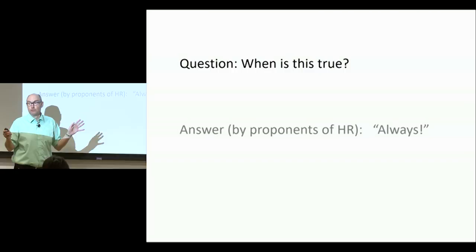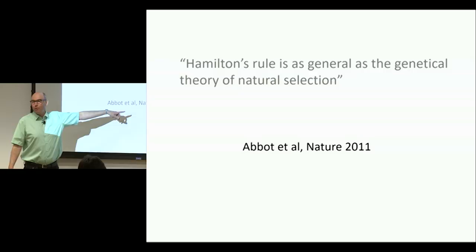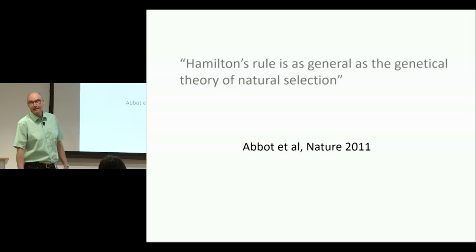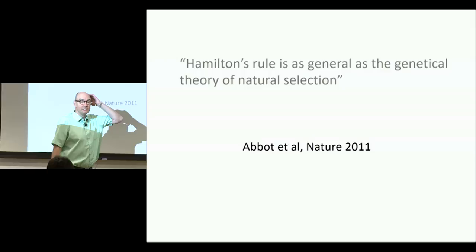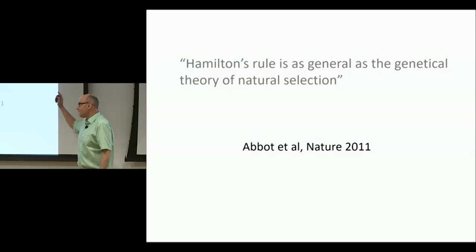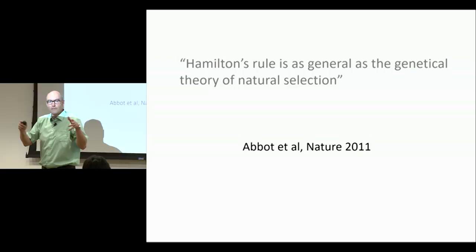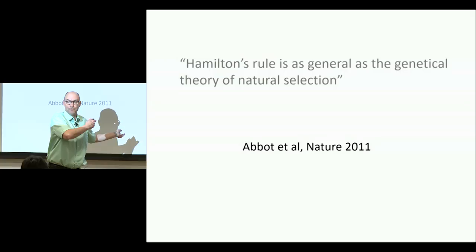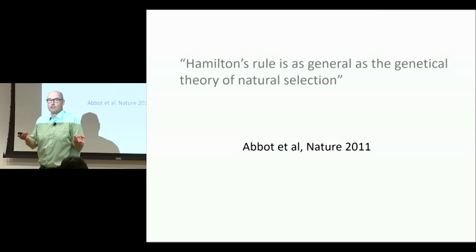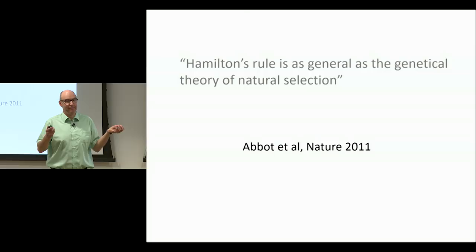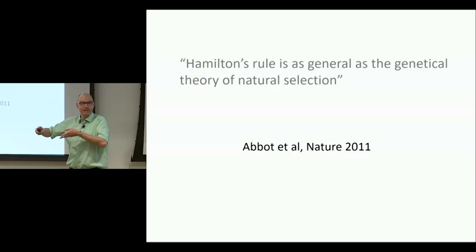In a letter signed by over a hundred people in Nature, in response to a paper I wrote with Corina Tarnita and E.O. Wilson, the authors stated: 'Hamilton's Rule is as general as the genetic theory of natural selection.' In that paper we pointed out that inclusive fitness was very limited. The response sidestepped the inclusive fitness weakness by claiming Hamilton's Rule has no limitations. But the genetic theory of natural selection talks about many things that have nothing to do with Hamilton's Rule, so it cannot possibly be as general and still mean something.